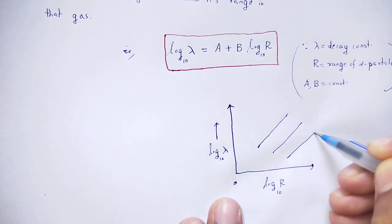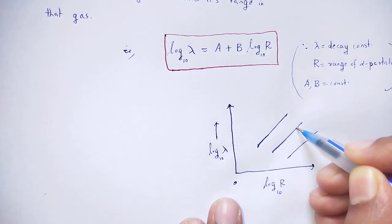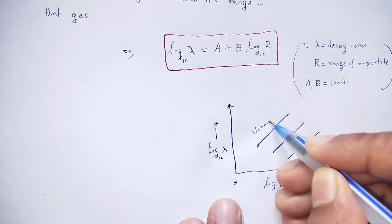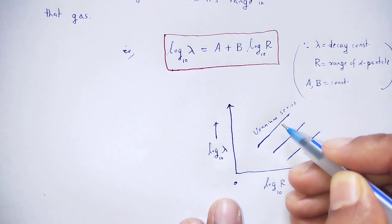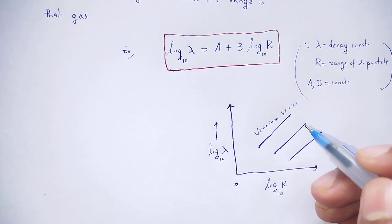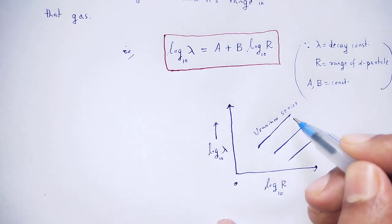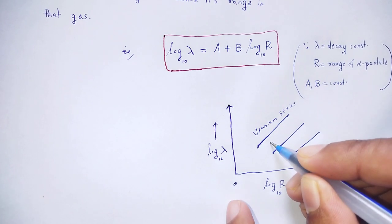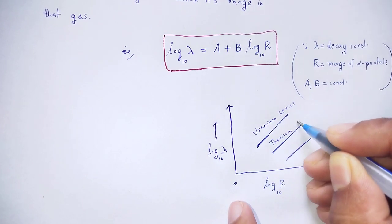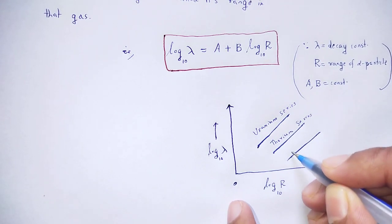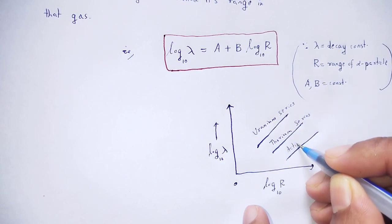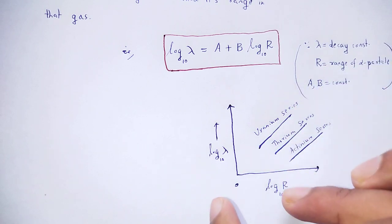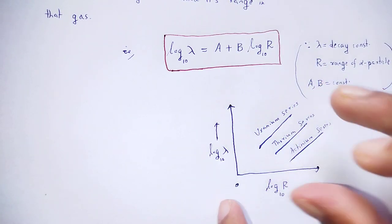For different radioactive series — the uranium series, the thorium series, and the actinium series — each series contains its own isotopes. When range versus decay constant is plotted, each series gives a linear graph, confirming the Geiger-Nuttall relation.